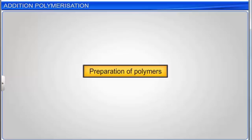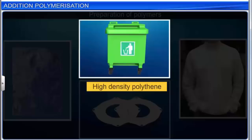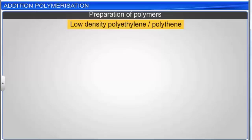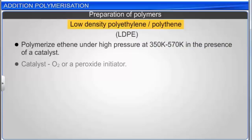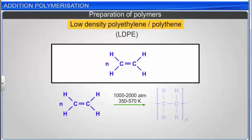Eventually, chain termination occurs when the product radical combines with another free radical chain, resulting in the formation of the polymerized product — polythene. Let us now look at how some important addition polymers are prepared and their uses. Some important addition polymers are low-density polythene (LDPE), high-density polythene (HDPE), Teflon, and polyacrylonitrile. To obtain LDPE, it is necessary to polymerize ethene under high pressure in a temperature range of 350 to 570 Kelvin in the presence of a catalyst.